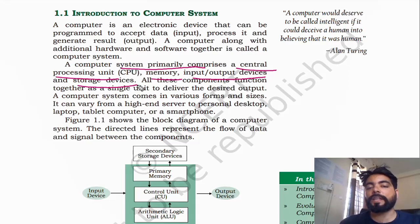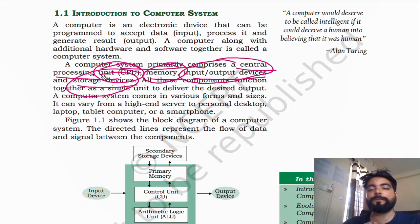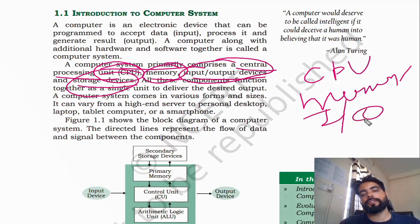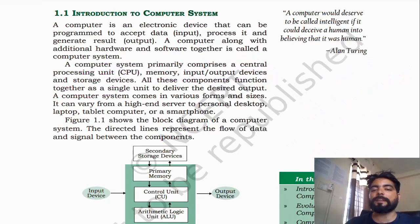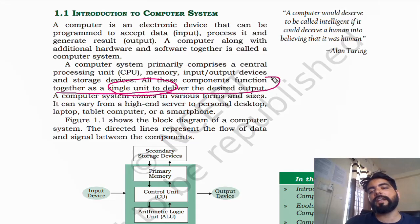So a computer system has four main things: first is CPU, second is memory, third is input-output devices, and fourth is storage. We can also view input-output devices as separate units. All these components function together as a single unit to deliver the desired output.